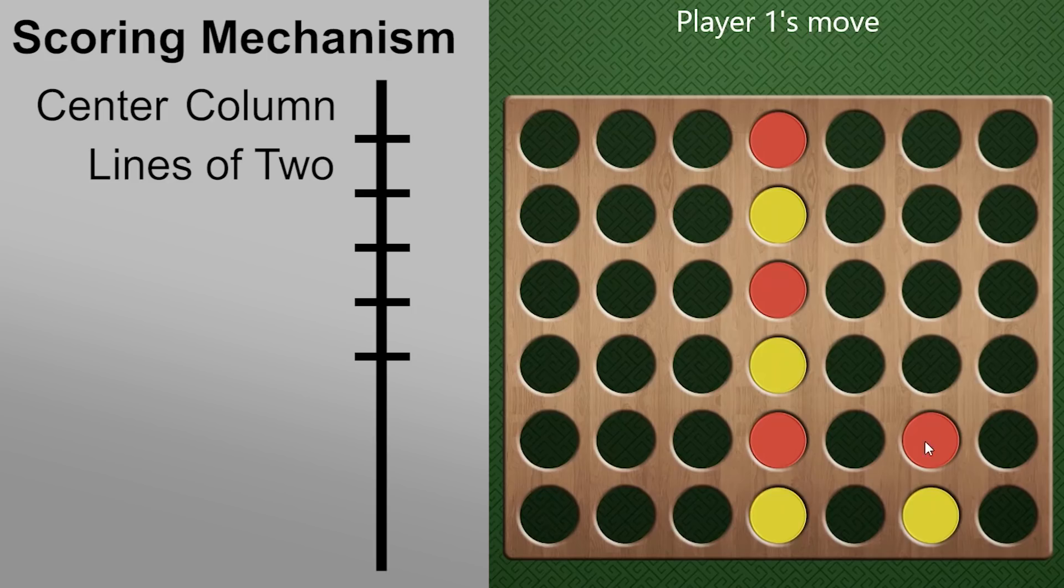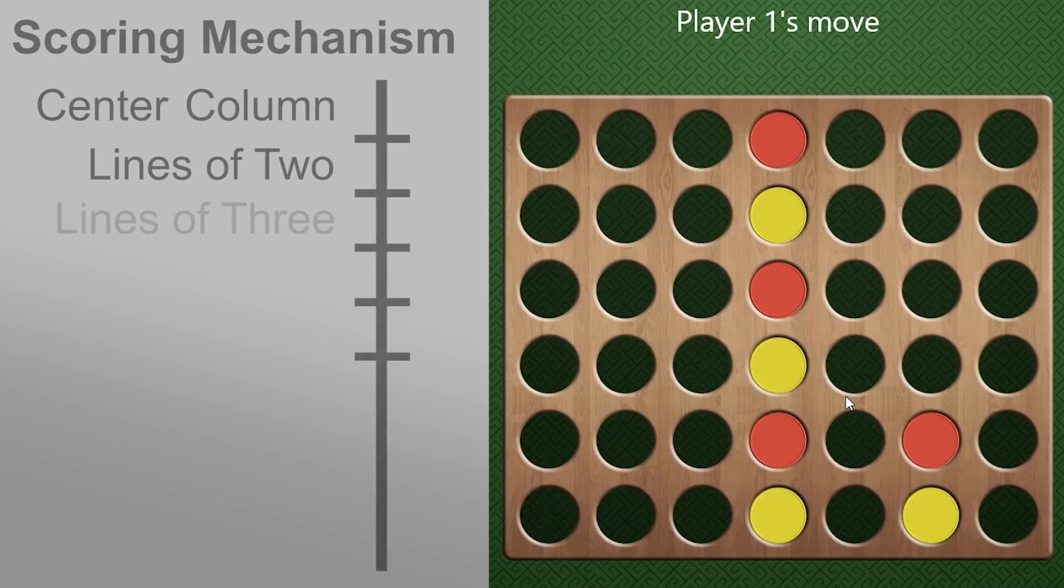Okay, building upon that, he put his piece on top of me here. So that gives me the option to put a line of three in a row, which is even better than two in a row. So I'll put my piece right here.